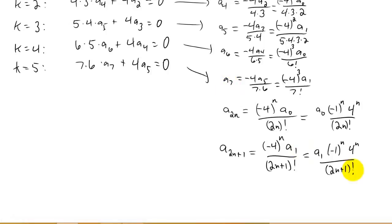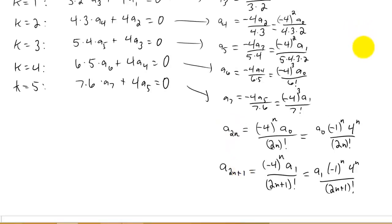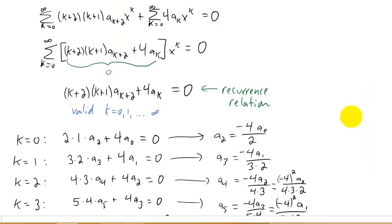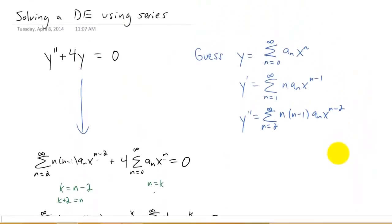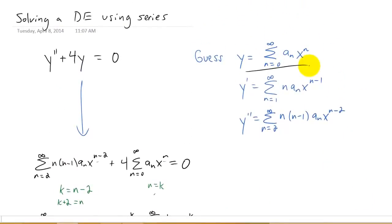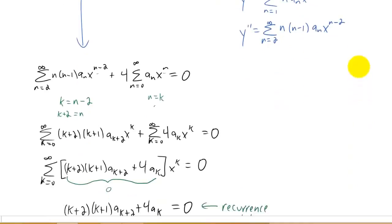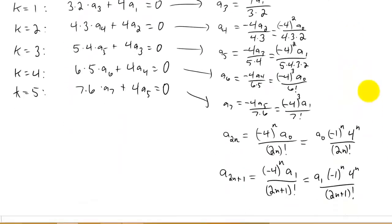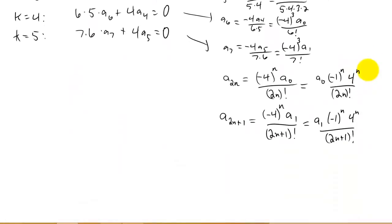That was pretty fun. We got to find a pattern for both our even coefficients and our odd coefficients. What were we actually doing here again? Way back at the beginning, we made a guess that the solution to our differential equation was a sub n x to the n. We just found out what a sub n was. We had to split it up into two different pieces.